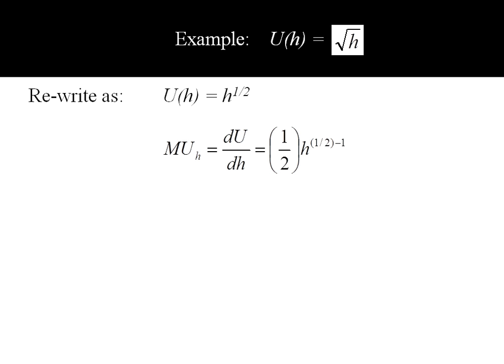The marginal utility of h will be the first derivative of utility with respect to h. That 1 half, the exponent, comes down in front. We reduce the exponent on h by 1. We can do some simplifying.